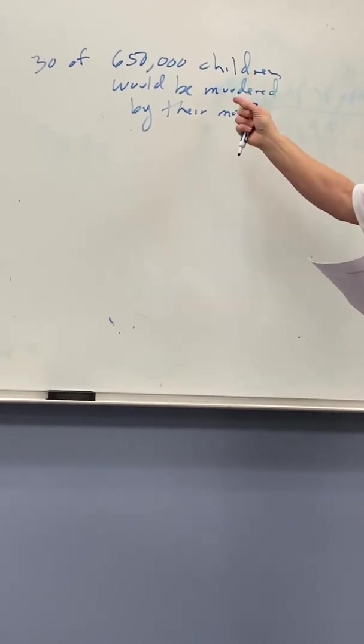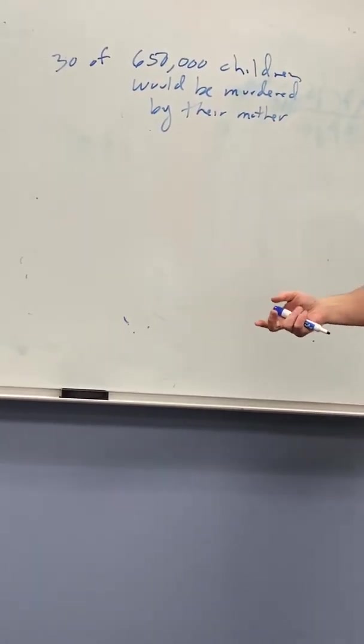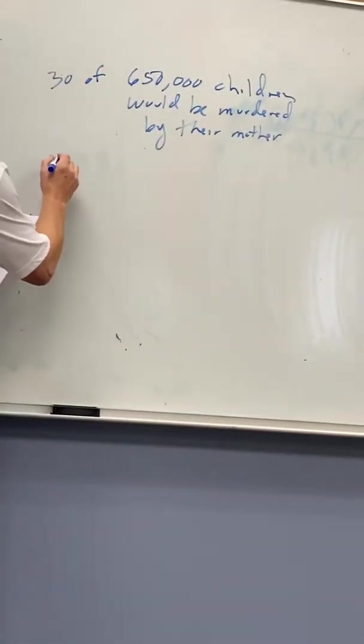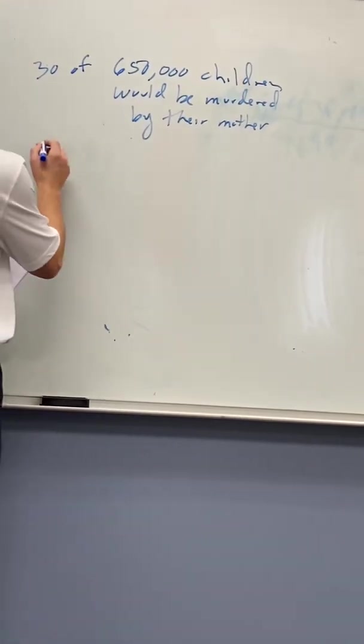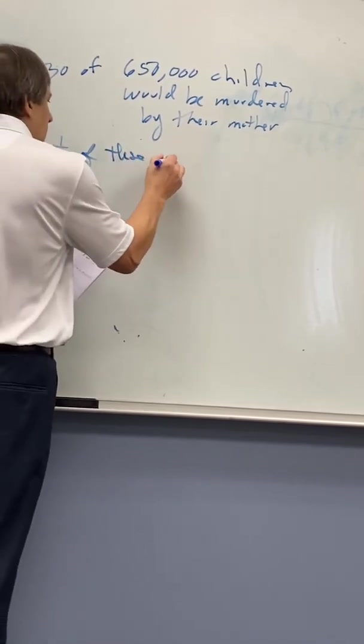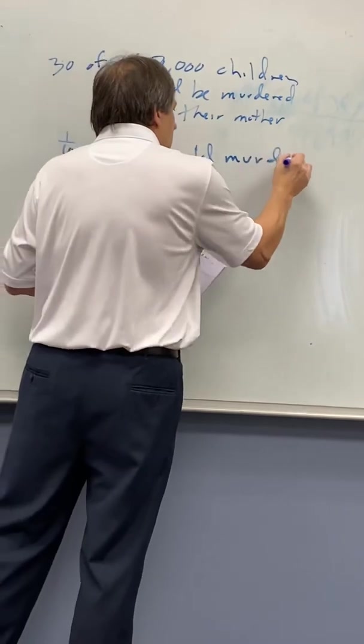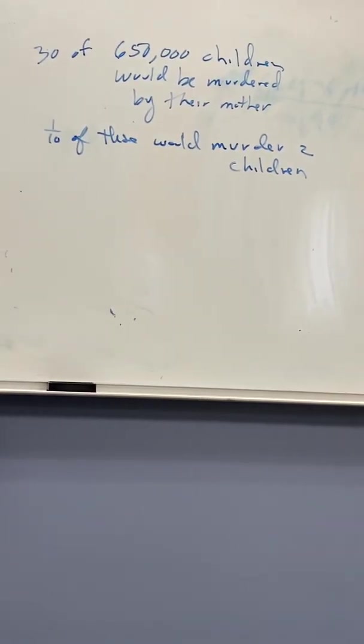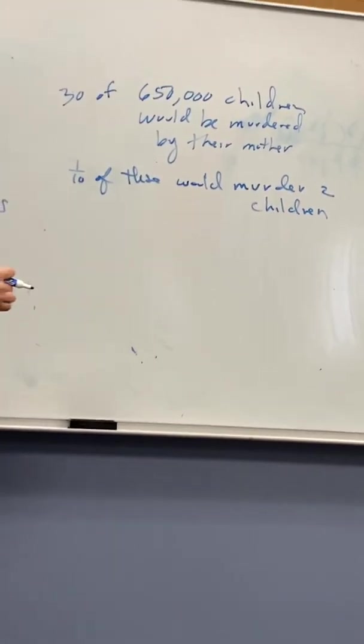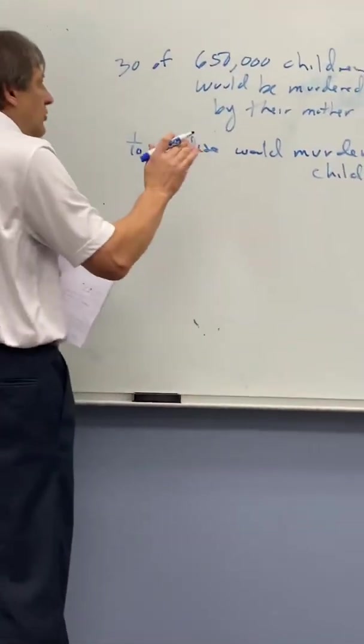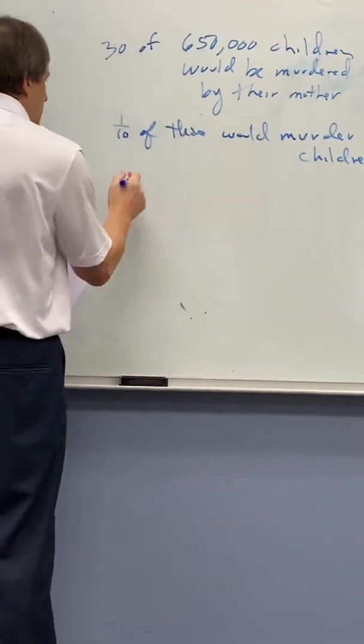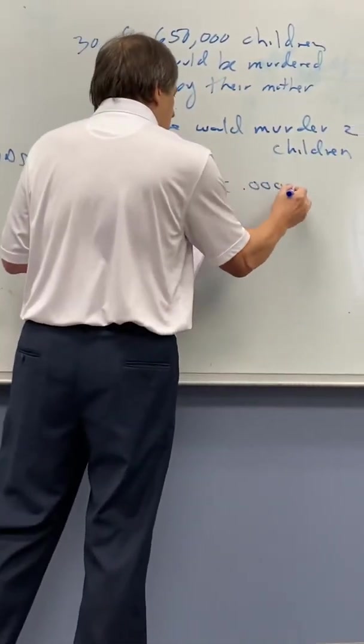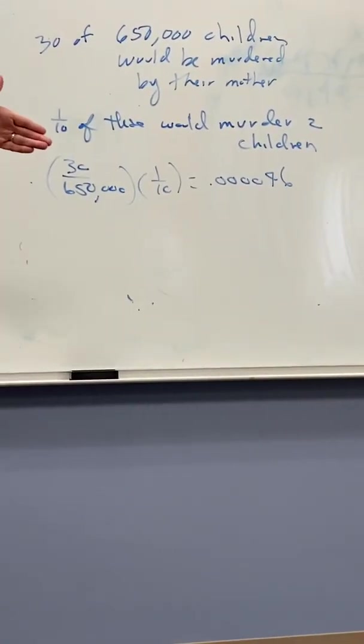They say, well, isn't it probably rarer that a mother murders two children, right? I mean, you may murder one and not the other. So they estimated that one-tenth of these would murder two children. So how do we put all of this together? Well, if we have 30 out of 650,000 children would be murdered by their mother, and we're saying just one-tenth would murder two children, then 30 over 650,000 times one-tenth is equal to 0.000046. So this is also a rare situation, all right?